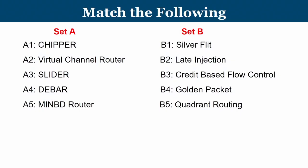The first set of questions is a match-the-following exercise. On the left side in Set A, you have been given names of routers: chipper, virtual channel router, slider, dbar, and minbd router. We learned about the internal working and operational principles of all five deflection routers. Some properties are given: silver flit, late injection, credit-based flow control, golden packet, and quadrant routing. Let us find the correct matching.